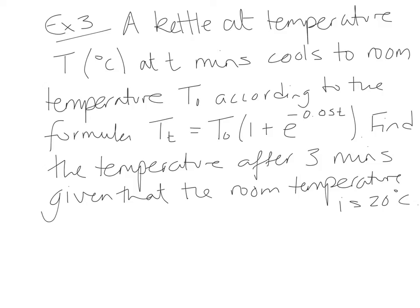Example 3. A kettle at temperature T, and that's in degrees Celsius, at small t minutes, cools to room temperature, which is T0, according to the formula T small t is equal to T0, bracket 1 plus e, to the power minus 0.05T. It's asking us to find the temperature after 3 minutes, given that the room temperature is 20 degrees Celsius.